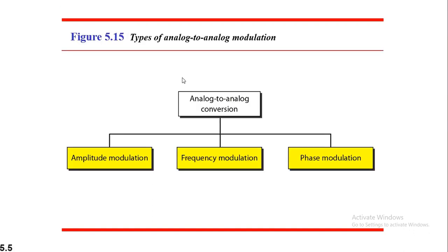Then we have analog-to-analog conversion, where we convert a low-pass analog signal to a bandpass analog signal. Under this scheme, we have three different techniques: amplitude modulation, frequency modulation, and phase modulation. By varying amplitude, frequency, or phase, we can generate different signal elements. Once these signals have been generated, they are passed through your communication channel and sent to the destination.